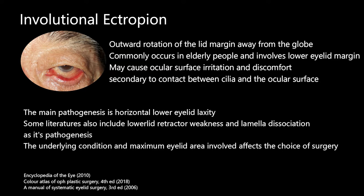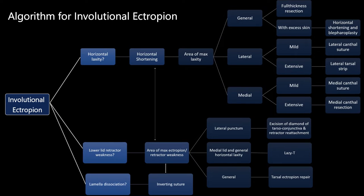The main pathogenesis is horizontal eyelid laxity. Some literature also includes lower lid retractor weakness and lamellar dissociation as its pathogenesis. The underlying condition and maximum area involved affect the choice of surgery.